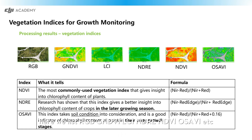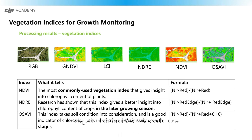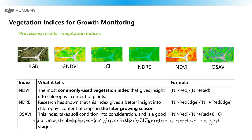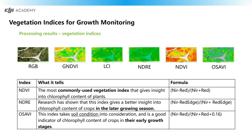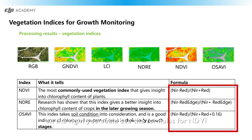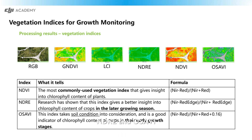Here we list RGB, GNDVI, LCI, NDRE, NDVI, and SAVI, among others. NDVI is the most commonly used vegetation index, as mentioned. Research has shown that NDRE gives better insight into the chlorophyll content of crops in the later growing season. SAVI takes soil condition into consideration, making it a good indicator in the early growth stages of crops. On the right you can see the formulas for NDVI, NDRE, and OSAVI. All of these vegetation indices can be used based on your actual situation.